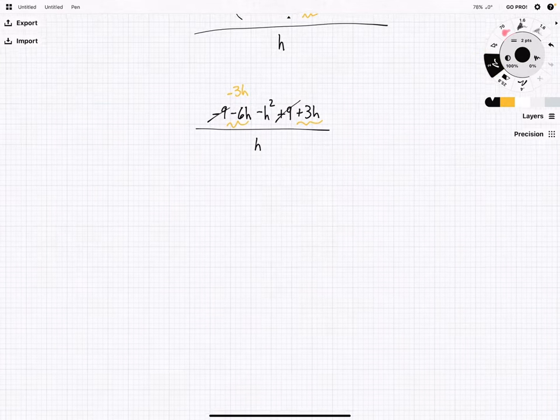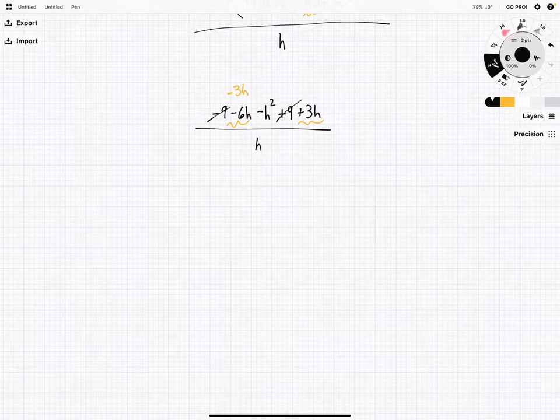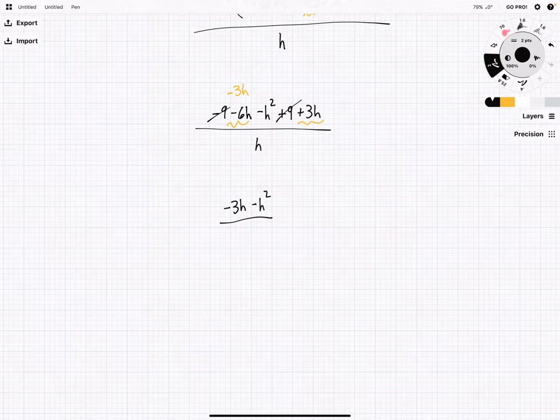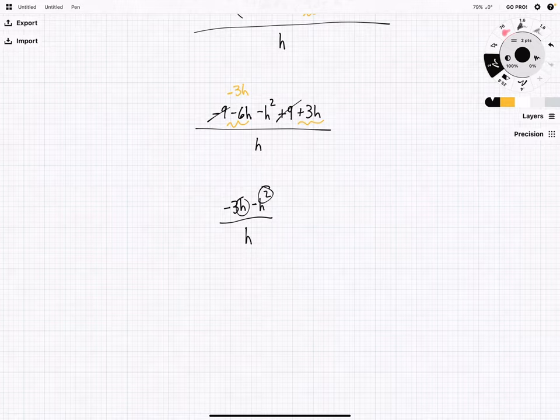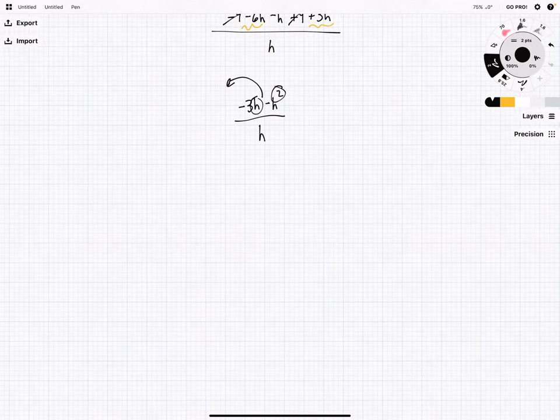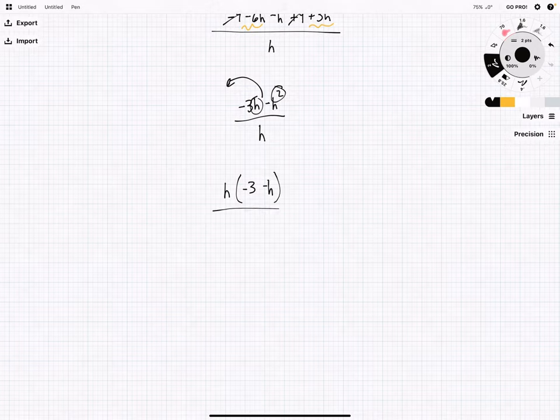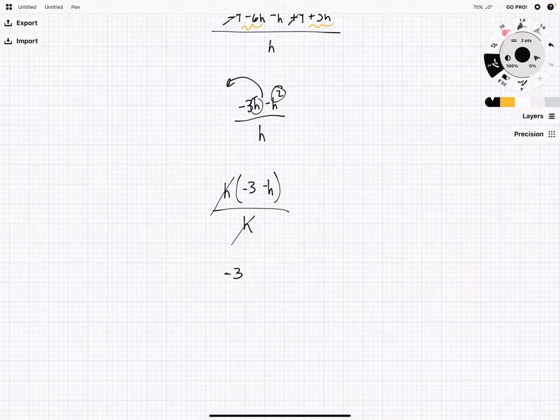Okay. So, now we have negative 3h minus h squared all over h. We can factor out an h. So, let's see what that looks like. We'll have an h times negative 3 minus h all over h. Now, we can cancel it out. That gives us negative 3 minus h. And that's our answer.